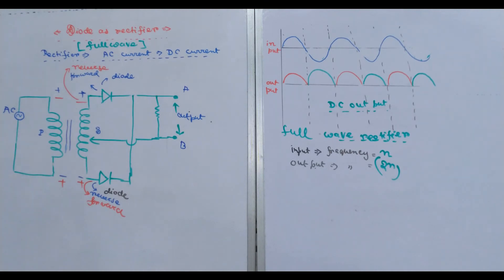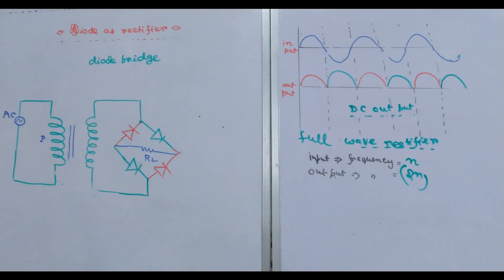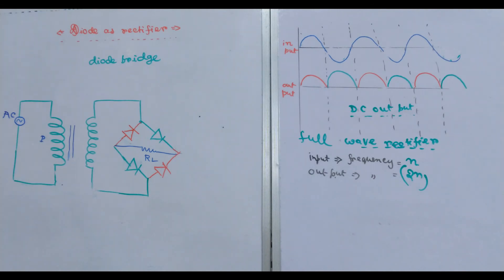What is a diode bridge and how does it work? We basically call it a diode bridge. Be careful when we see different colors — we see different colors, and we see blue colors.